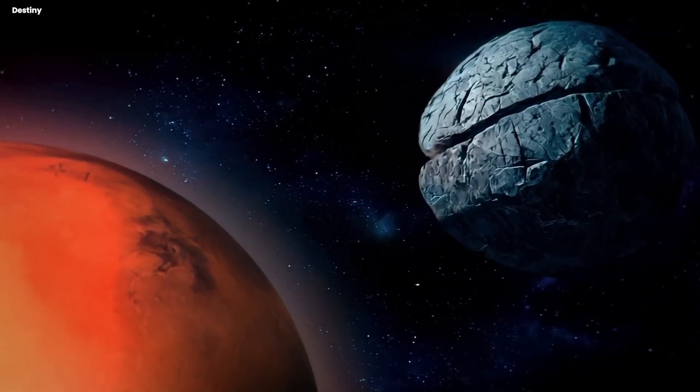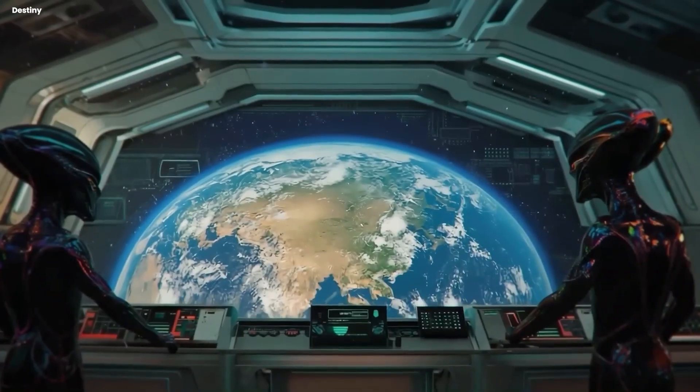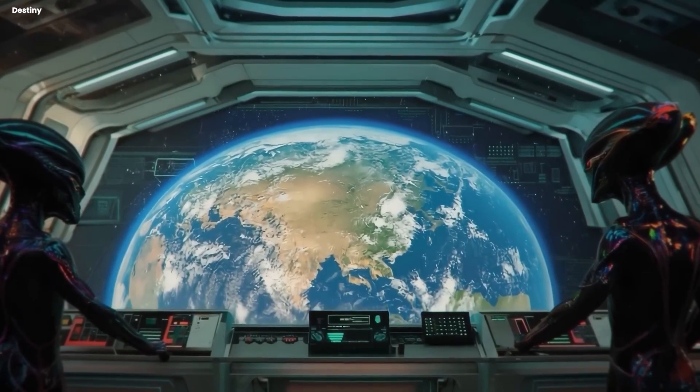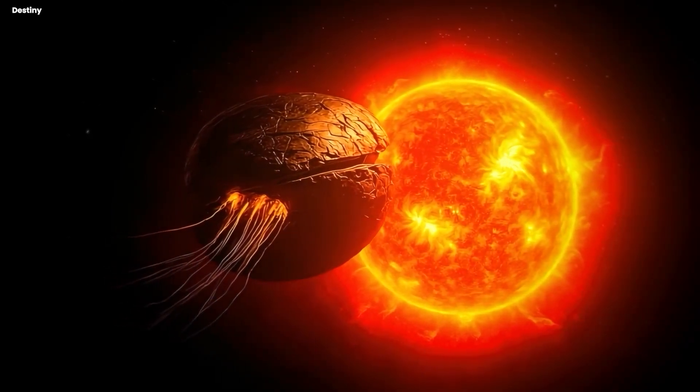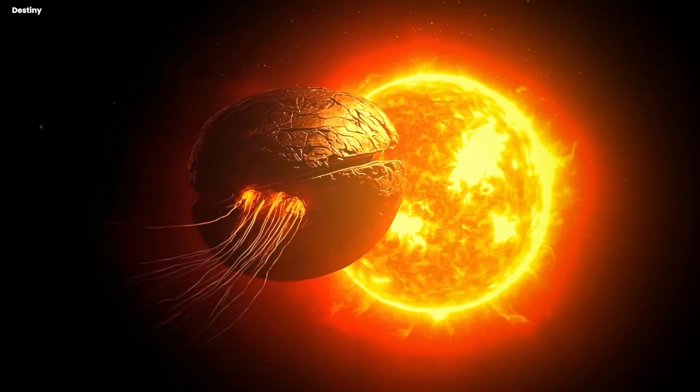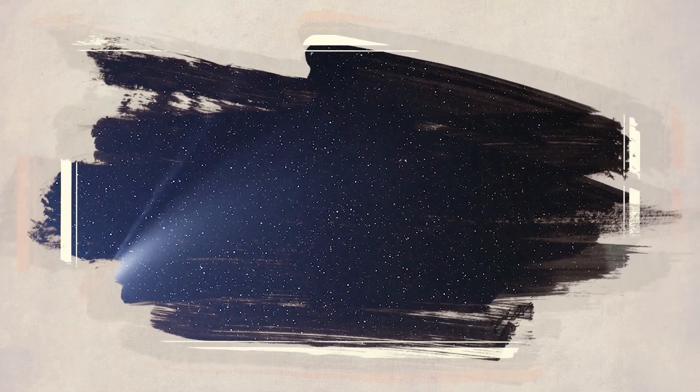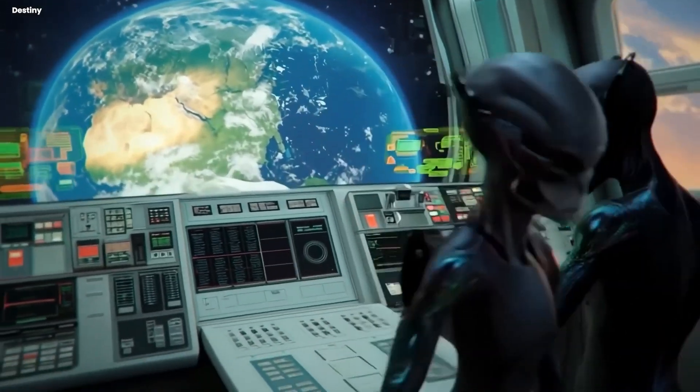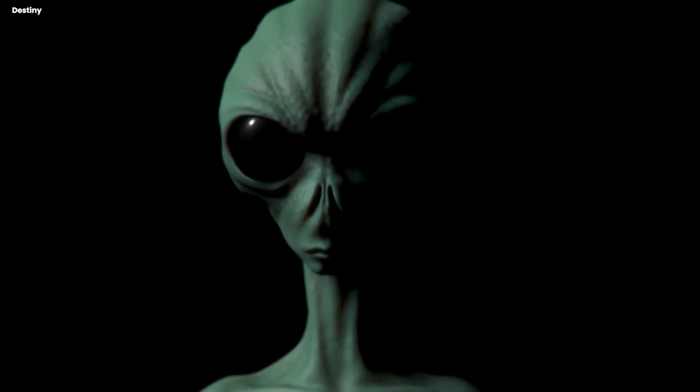But that doesn't make it any less scientifically valuable. Even if it's natural, 3I Atlas is still only the third confirmed interstellar object we've ever detected, and it's by far the largest and most active. Every observation we make, every spectrum we analyze, every image we capture, is teaching us something about how planetary systems form in other parts of the galaxy. We're learning what's normal elsewhere versus what's unique to our own solar system, and that's important work, even if it doesn't involve aliens. Loeb's final thought on all of this is worth remembering. When you have a visitor to your backyard, you better know its nature. Whether it's natural or artificial, whether it's a comet or something else, we have a scientific obligation to study it thoroughly and figure out what it is. And maybe that's the real lesson here. Sometimes the most extraordinary claims require extraordinary evidence, and sometimes the absence of that evidence is itself an answer. Please like and subscribe for more 3I Atlas updates.